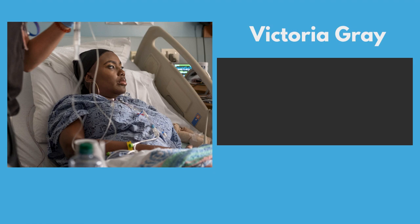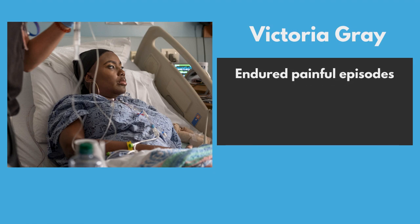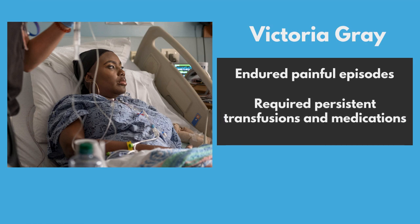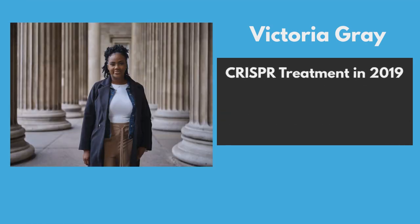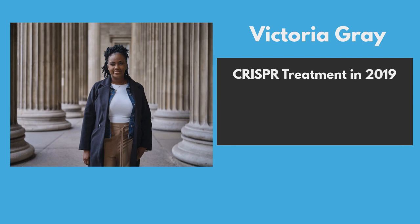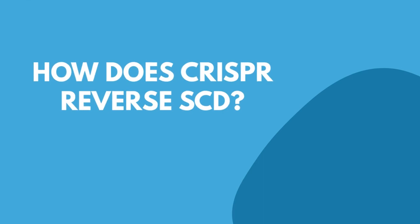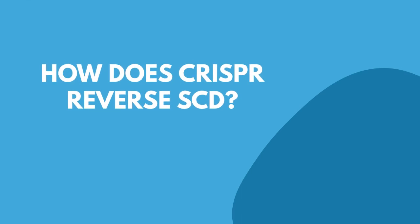It was in 2019 when Gray found herself grappling with the overwhelming burden of this condition, enduring the unpredictable and debilitating pain episodes that would require persistent blood transfusions and medications. It was this relentless struggle that led her to consider CRISPR. Four years later, Gray does not display any sickle cell disease symptoms and is living a life of what she describes without limitations and as a person who has been reborn. So how does CRISPR work in treating sickle cell disease, as seen in Victoria Gray's case?